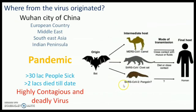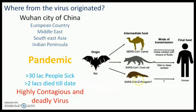The virus originates from a bat, which contains many types of coronavirus. This virus came to human beings via an intermediate host called pangolin, though this is still doubtful.